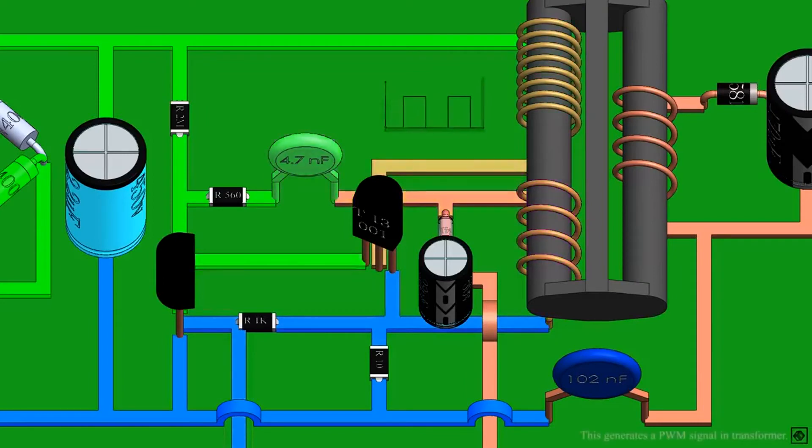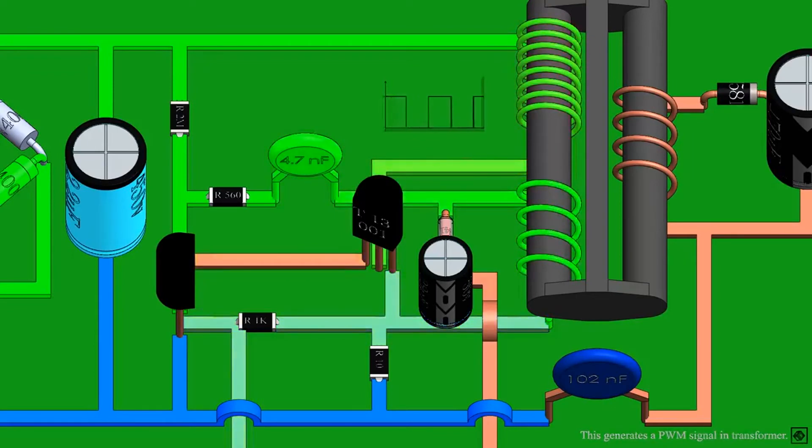Now the current flows to the base of T1 and the cycle repeats. This happens at 15 to 50 kilohertz, which is a thousand times faster than the rectifier circuit. Hence you would see that the rectifier circuit is stopped.